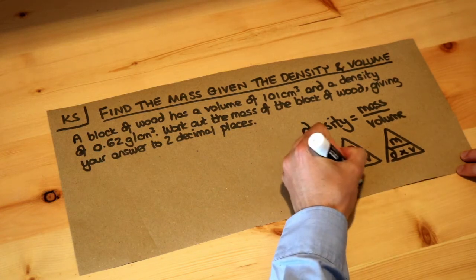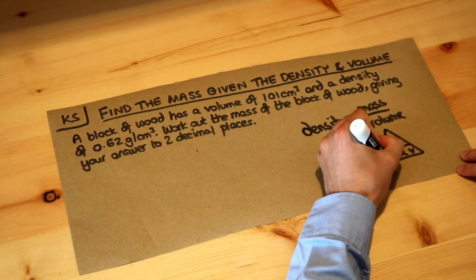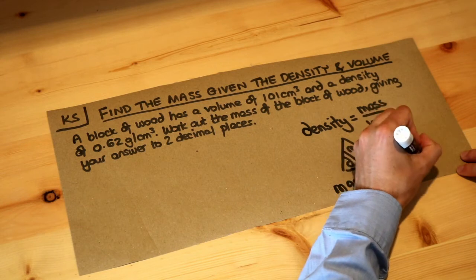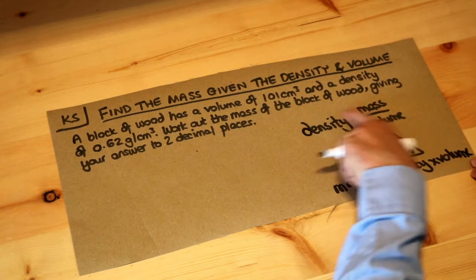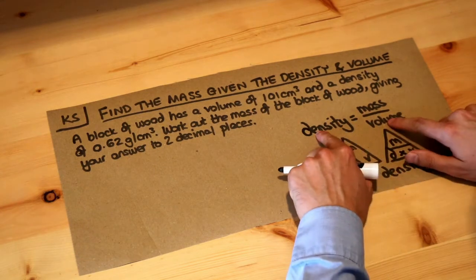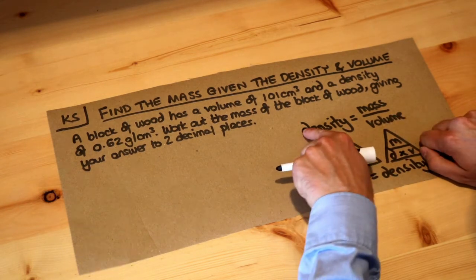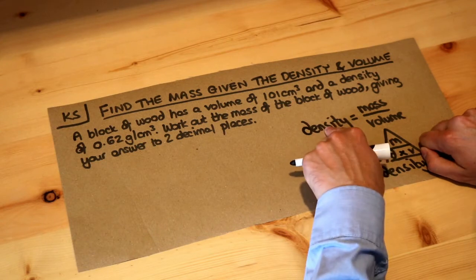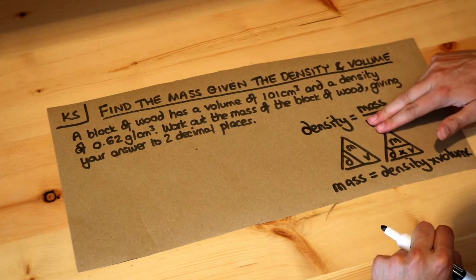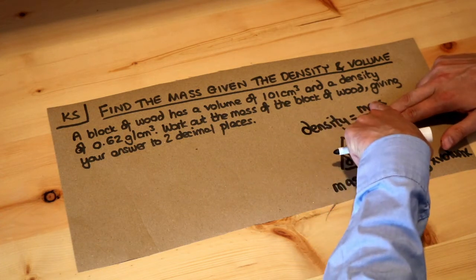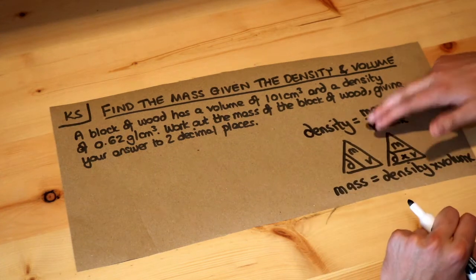So let me write that formula: the mass is equal to the density times the volume. The other way you can see it without having to use this triangle is if you look at this formula here, if I multiply both sides of the equation by volume, on the left hand side I would have density times volume, and on the right hand side the volume cancels, leaving mass. So mass equals density times volume.